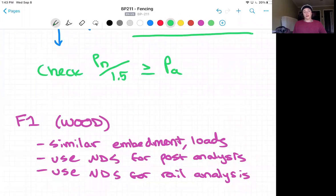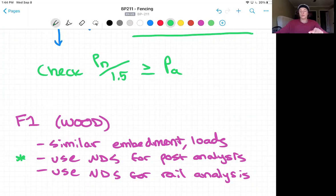Everything is going to be similar as far as loads and embedment goes. What will be slightly different is the dead load because we have a different material, but we're going to make sure to use the NDS when we're checking the posts and the rails capacity, internal capacity of the material of the section. Remember to use the NDS for that instead of using the AISC like we did in the previous lectures for the F2 detail.